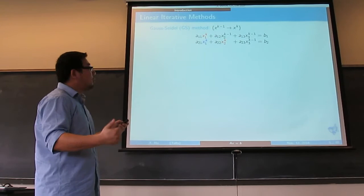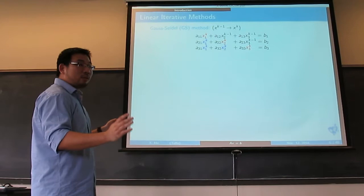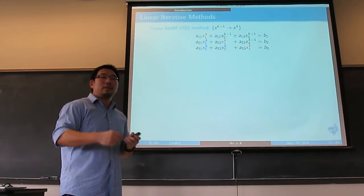Then you move to the second equation. x_1 has already been updated, so you use the updated value. x_3 you use the old one, and you compute for x_2 — just one equation. Then you move to the third one: use the most updated x_1 and x_2 from the previous two equations, and you solve for x_3.